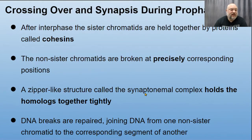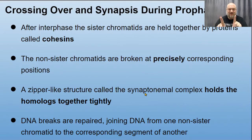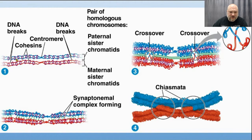After interphase, sister chromatids are held together by proteins called cohesins, which are very strong in meiosis. Non-sister chromatids are broken at precisely corresponding positions, and a zipper-like structure called the synaptonemal complex holds the homologs tightly together. Any DNA breaks are repaired in a way that can join DNA from one non-sister chromatid to the corresponding segment of another — that is crossing over. We can see the two sister blue chromatids, two sister green chromatids, forming homologous chromosomes together with a crossover point where red connects to blue and blue to red.